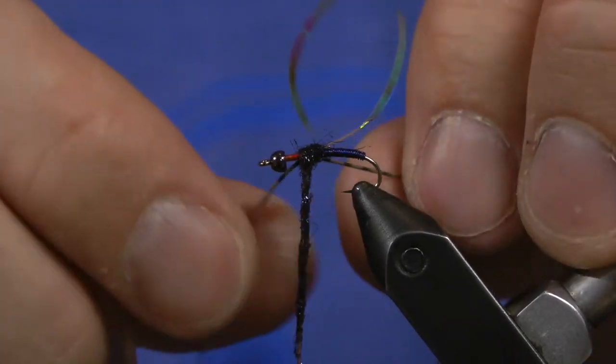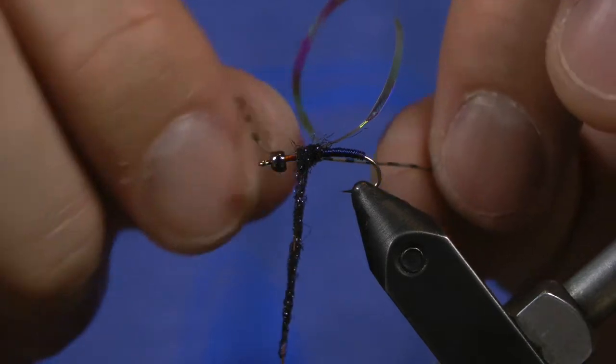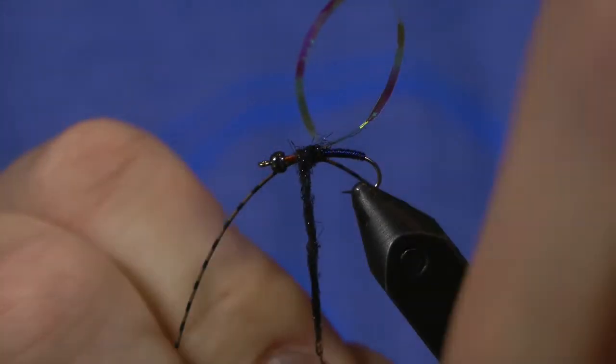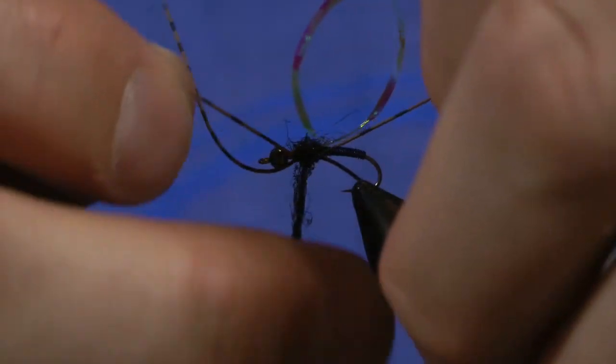While using dubbing, I wrap in these centipede legs just to add some interest to the fly. We put them approximately the same spot on both sides here.